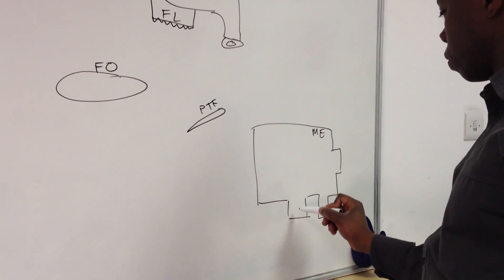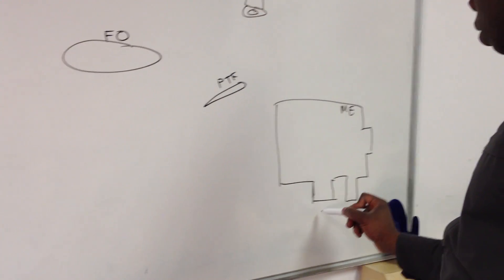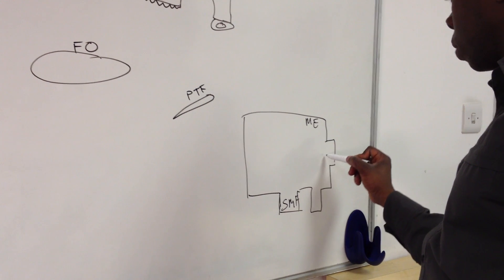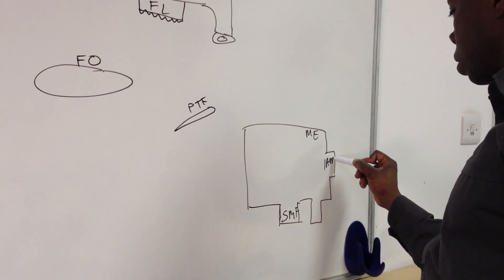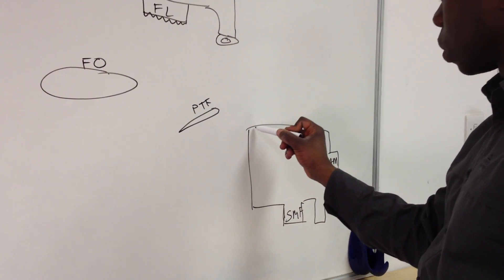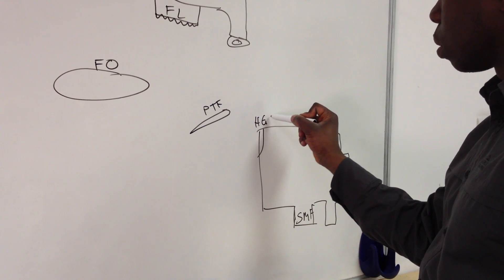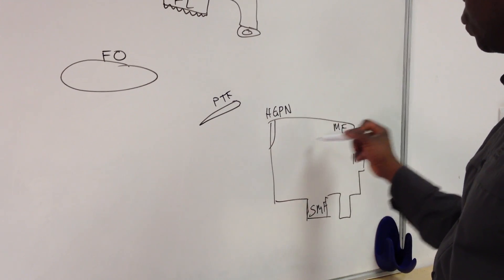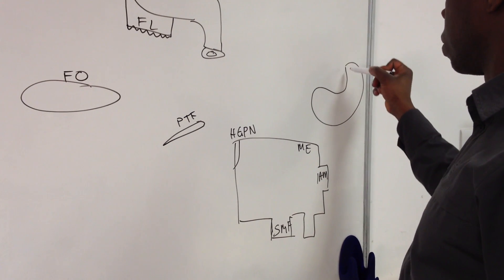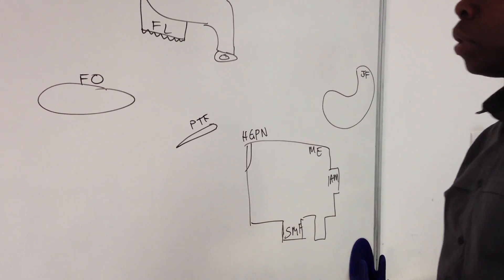This is your middle ear - right inside where all your ossicles are. You've got your stylomastoid foramen, your internal acoustic meatus, and this is a pathway in for some nerves which I'll highlight later. Here is a hiatus for the greater petrosal nerve, and then here you've got this kidney-bean shaped foramen which is your jugular foramen.